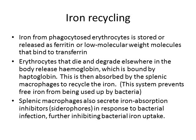What about red blood cells that die elsewhere in the body? Not all red blood cells die in the belly of a macrophage in the spleen — some die elsewhere, degrade elsewhere, and release hemoglobin. That hemoglobin is bound by haptoglobin, and this complex ends up in the spleen and is absorbed by macrophages, which recycle the iron by releasing it as ferritin or bound to transferrin. This is important because free iron in the body is used up by bacteria, so this mechanism prevents free iron from being readily available for bacterial growth.